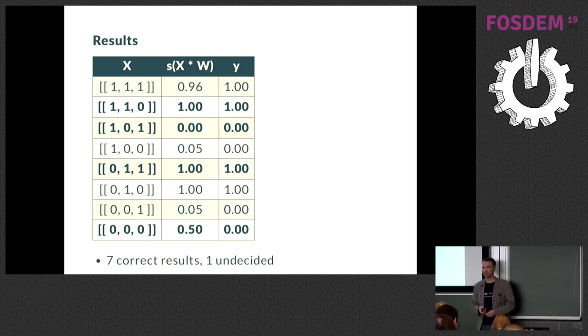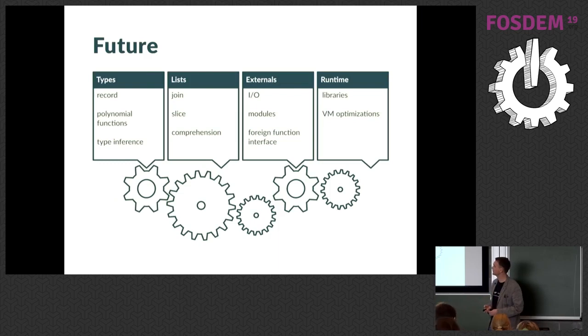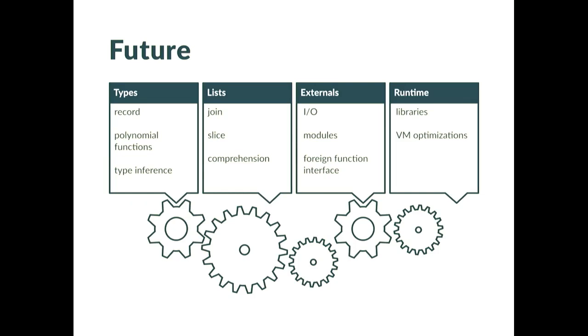Here are the results. Those values are the input values which the network has never seen, but it gives us proper results except for one value where it's undecided. Instead of saying that it should be zero, it gives us a 0.5 value, which is kind of an unexpected or undecided value. So that was the longer example. In the future, I want to extend types, add some operations on lists, use some externals, and improve runtime. Actually, records and list comprehension have been added since I wrote this presentation. I think I will now focus on some type inference. This is what many people want to do.